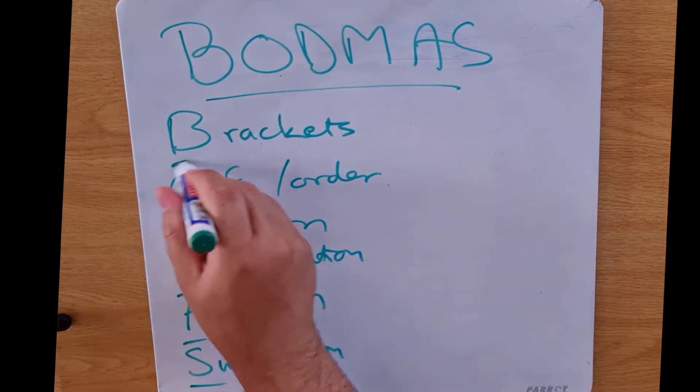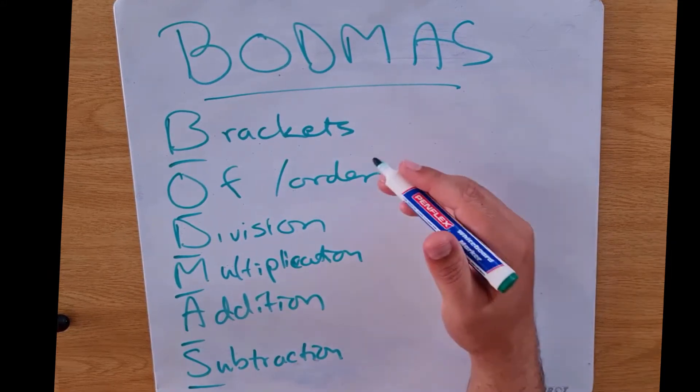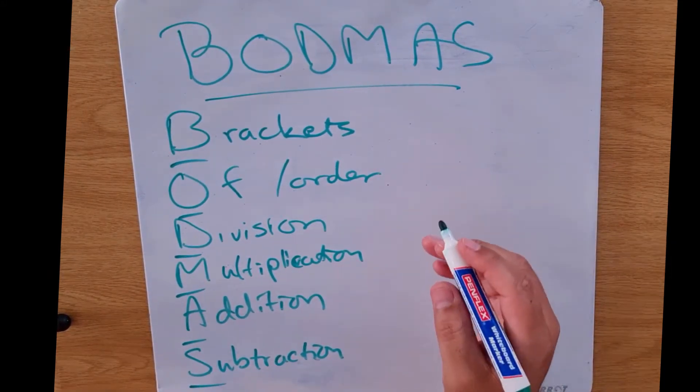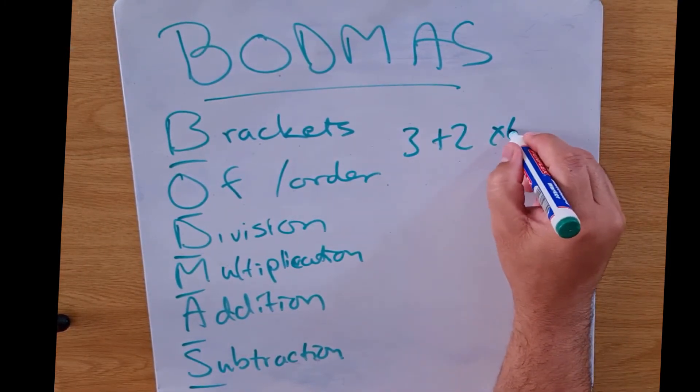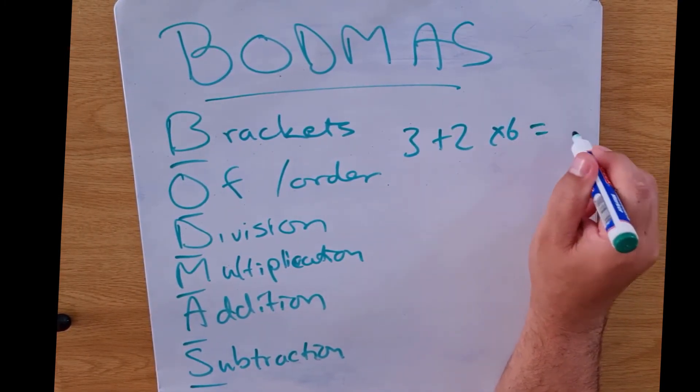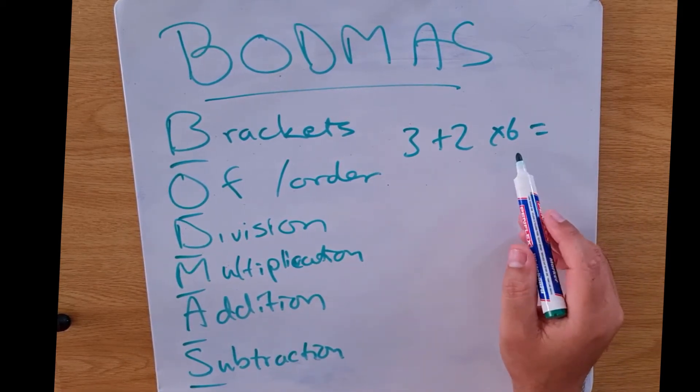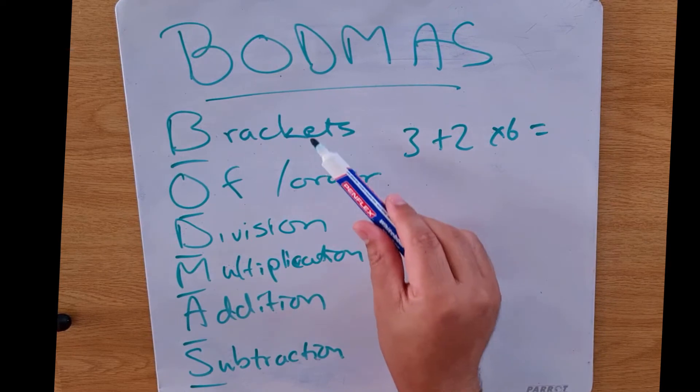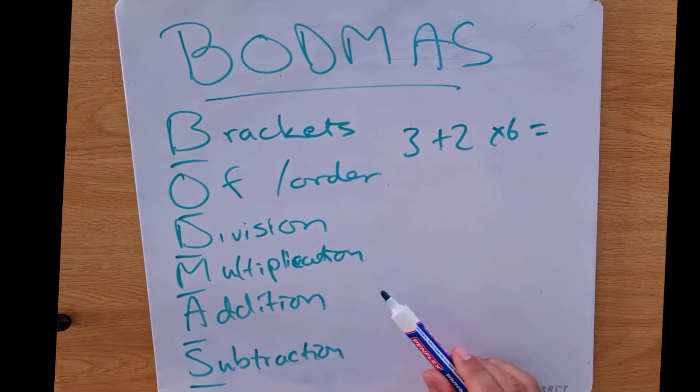So there are our letters that make up BODMAS. What this is saying to us is if we have a problem that we need to work out, so if we've got 3 plus 2 times 6 and we are looking for that answer, then we're going to look at our BODMAS and say, are there brackets, is there division, multiplication?